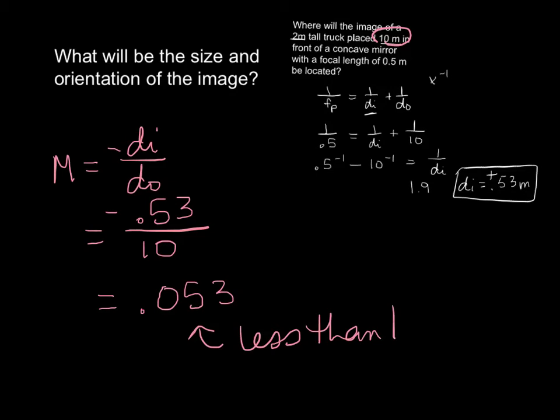And then the negative, or the orientation, remember this is a real image, so the orientation is inverted, since it's a real image. Real images are always inverted. We can also tell that because our magnification is going to end up being negative also.